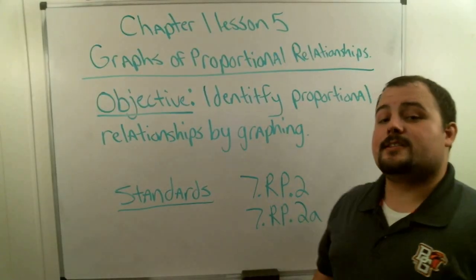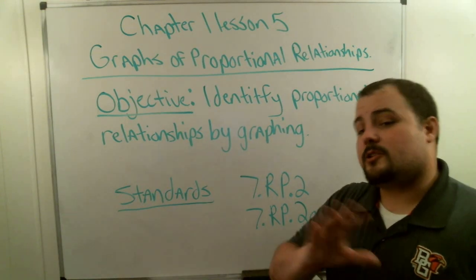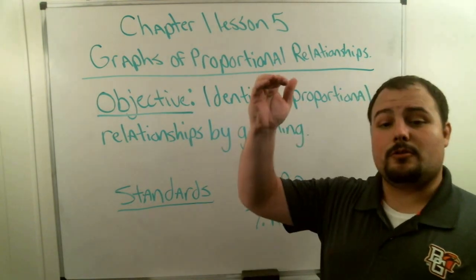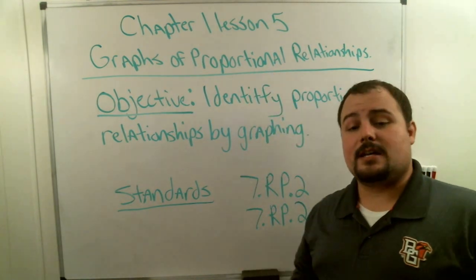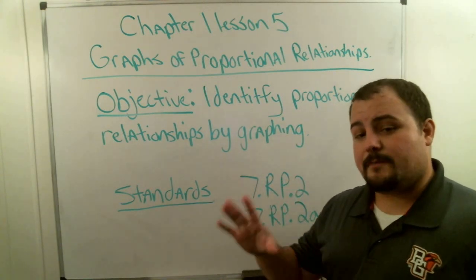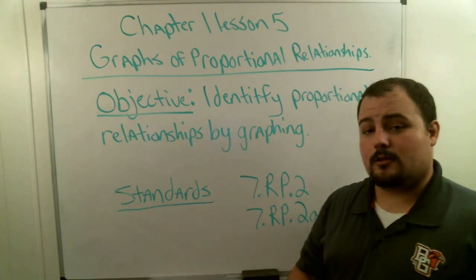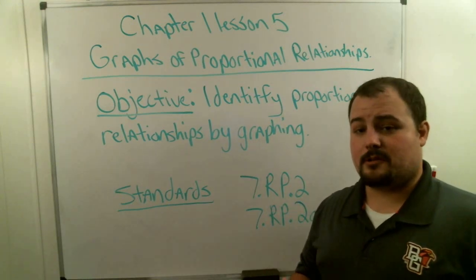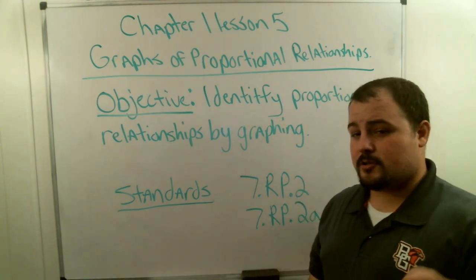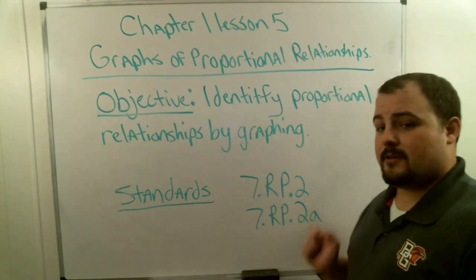Hey 7th graders, welcome to your 5th lesson. We're going to be talking about how to graph proportional relationships. You guys learned in the previous lesson that a proportional relationship is a ratio where, whenever you take the numerator divided by the denominator, you get the same number. A non-proportional relationship is where you're always getting something different. Our objective is to identify proportional relationships by graphing.